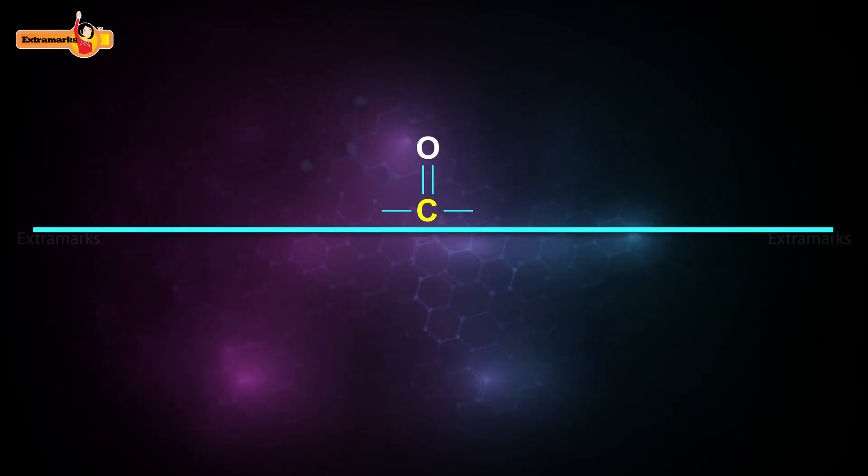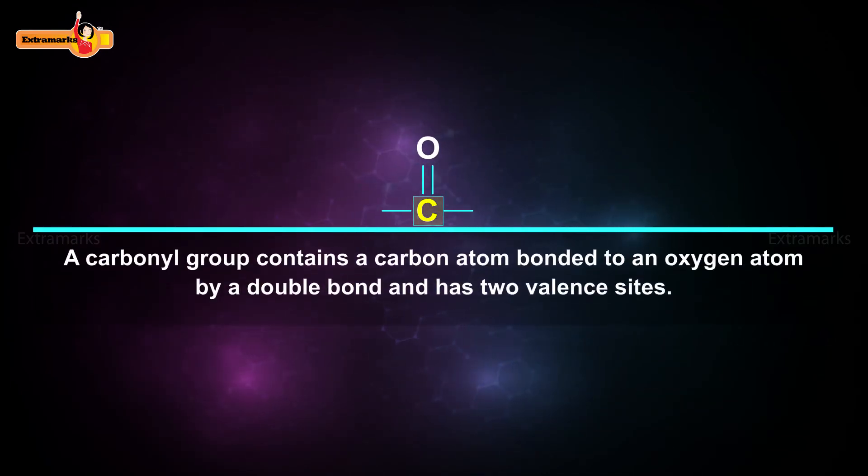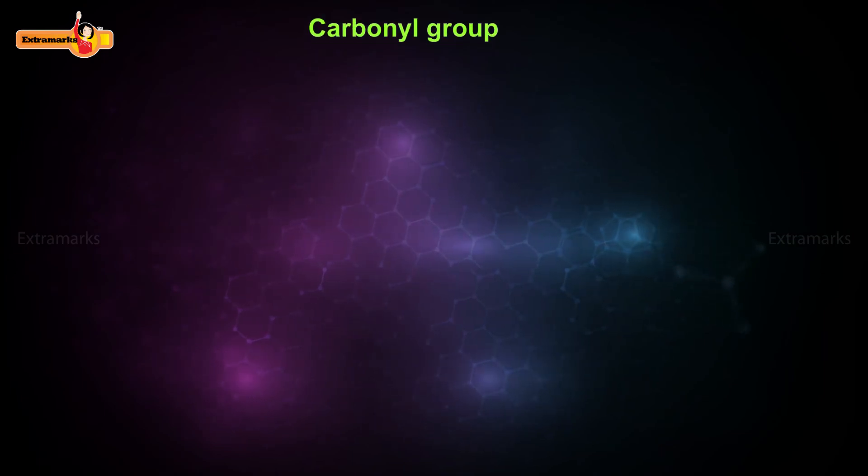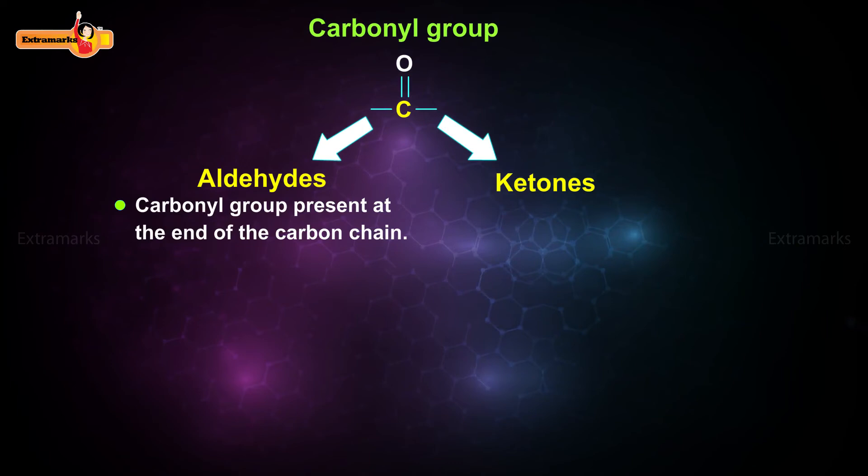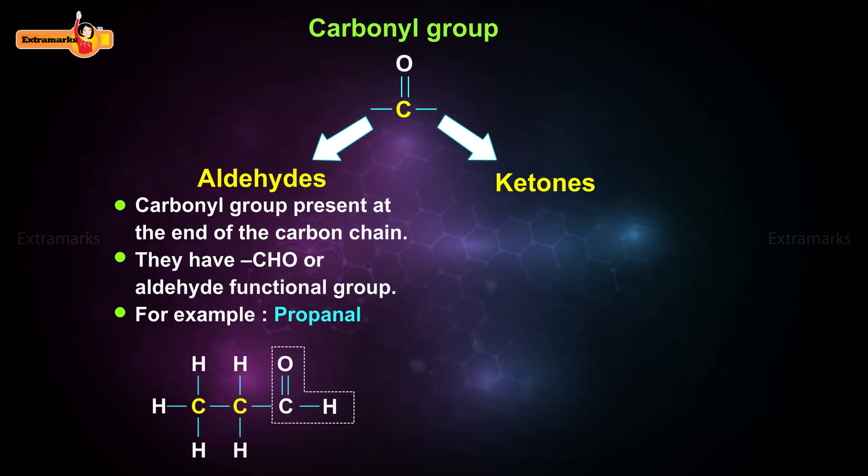A carbonyl group contains a carbon atom bonded to an oxygen atom by a double bond and has two valence sides. The carbonyl group can be present in hydrocarbons in two ways. One in which the carbonyl group is present at the end of the carbon chain. Such compounds are known as aldehydes. They have CHO or aldehyde functional group. An example of aldehyde is propanal.